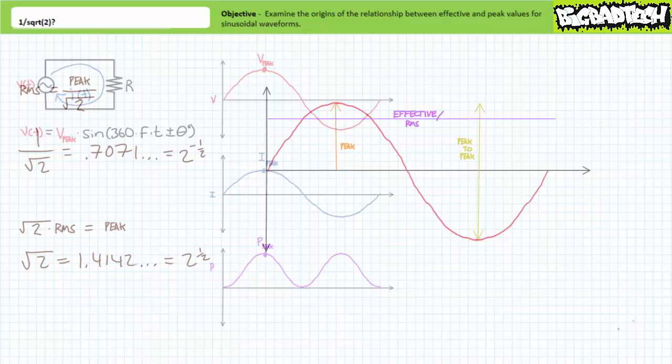Recall that sinusoidal AC voltage can be expressed as a function of time using the following formula. V(t) equals voltage peak times the sine of 360 times the frequency times the time of interest, plus or minus a phase shift in units of degrees. For this scenario, let's assume the voltage waveform includes no phase shift, and as such the formula can be written as V(t) equals voltage peak times the sine of 360 times the frequency times the time of interest.